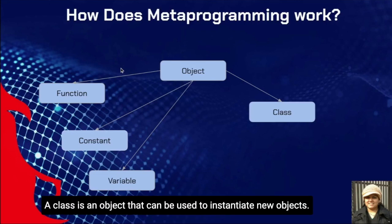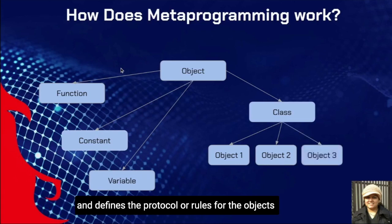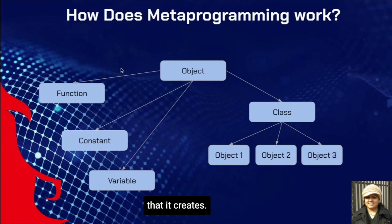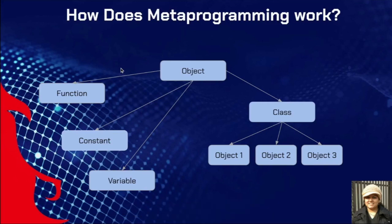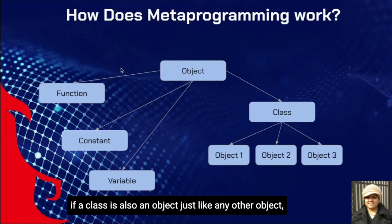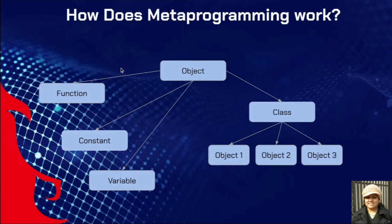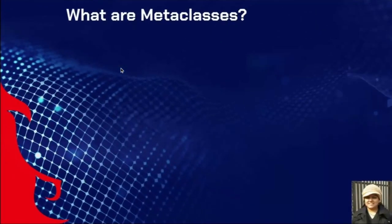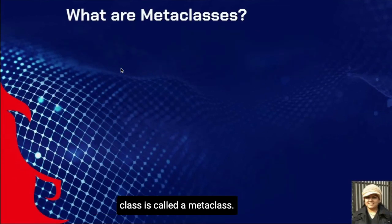A class is an object that can be used to instantiate new objects. A class can be seen as a bucket that groups objects and defines the protocol or rules for the objects it creates. But the question is: how do we instantiate the class? If a class is also an object, just like any other object, it must be an instance of something. That is exactly the question we will try to answer.